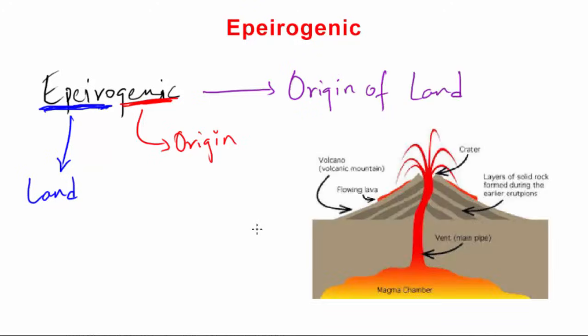Epeirogenic movements are vertical. So to make a piece of land, all the materials come out from within the earth's mantle, that is the magma. When that solidifies, it becomes hard rock. And once rock begins to break down through weathering, it turns into sediments. And that becomes land for us. So the movement is vertical.